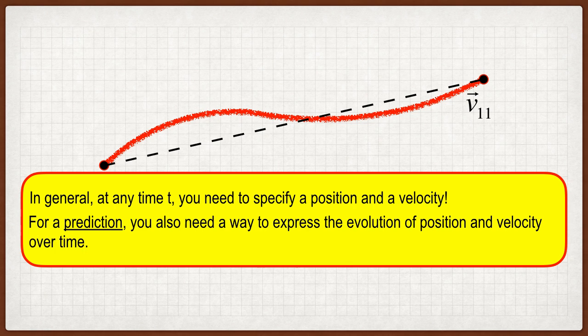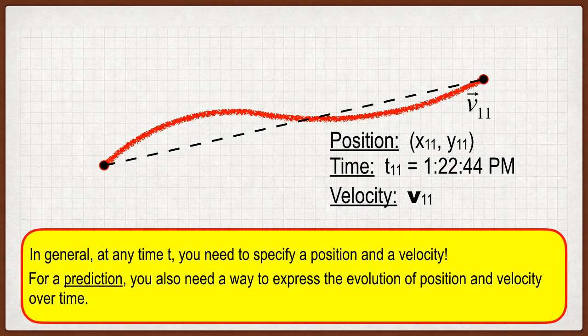This is some of the stuff that you have to specify carefully to describe the state of motion of an object. In general, at any time T, you have to specify a position and a velocity. In Galileo's world, physical science, natural philosophy, as they used to say in the olden days, this is specific. These are the conditions that you must know. If you want to say that you know something about a moving object, this is what you must know. Also, if you want to predict something, you have to have some way to express the evolution over time of both position and velocity.